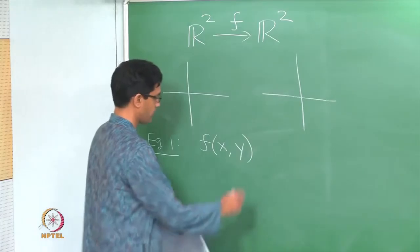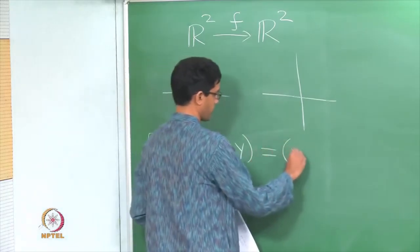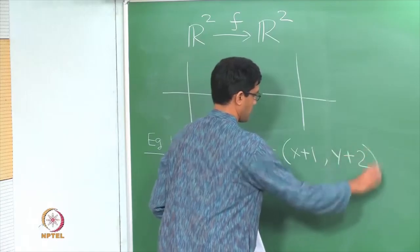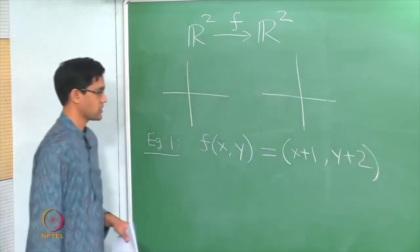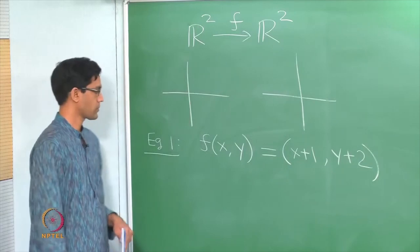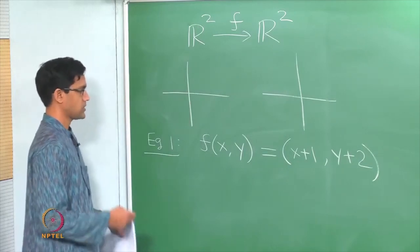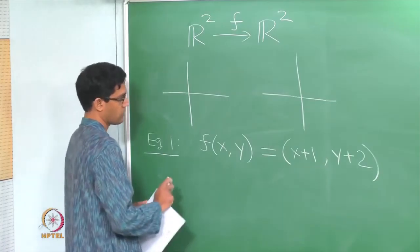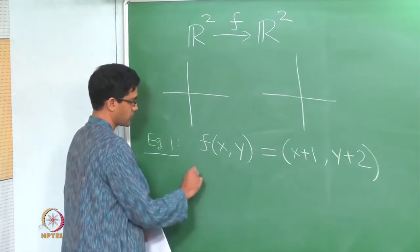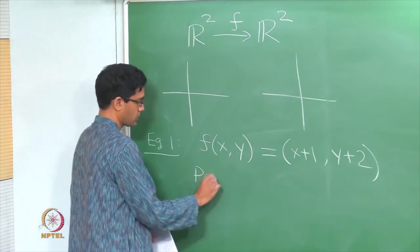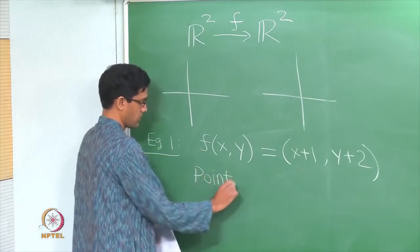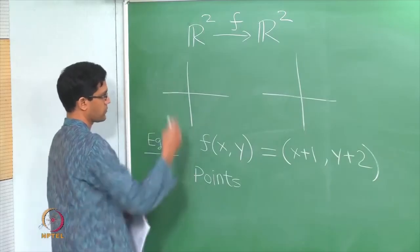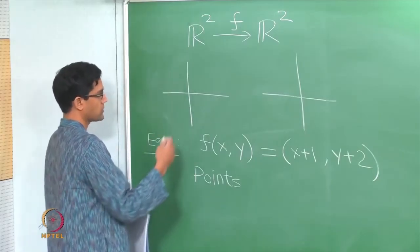Let us take the first example to be the function f(x, y) = (x+1, y+2). Now let us try and picture this function and understand what it does. Typically, how does one want to understand functions from R² to R²? Here are various ways of thinking about R² — what are various subsets of R²?